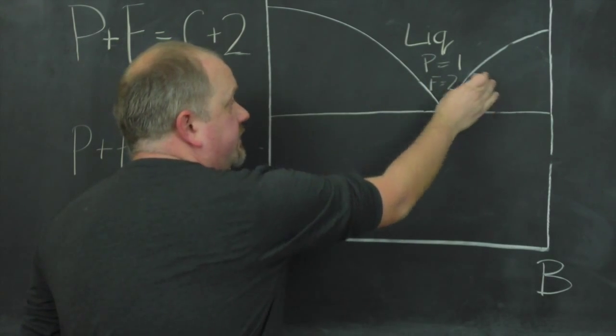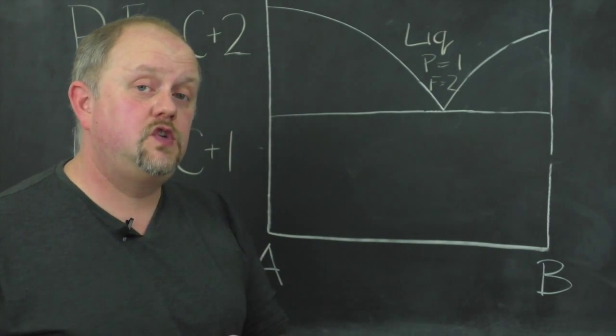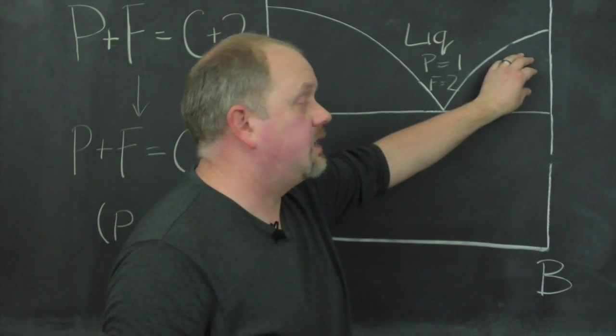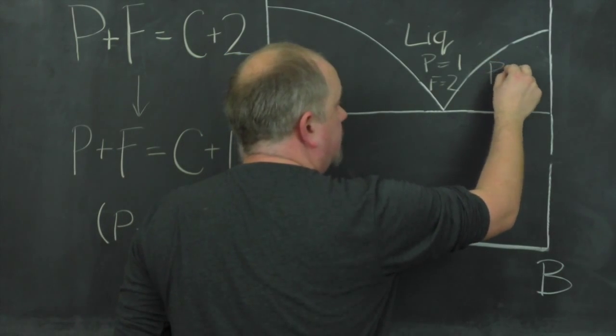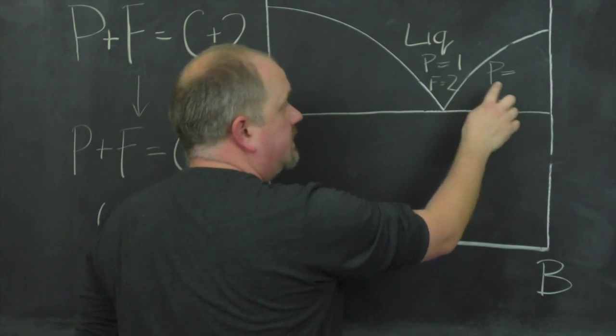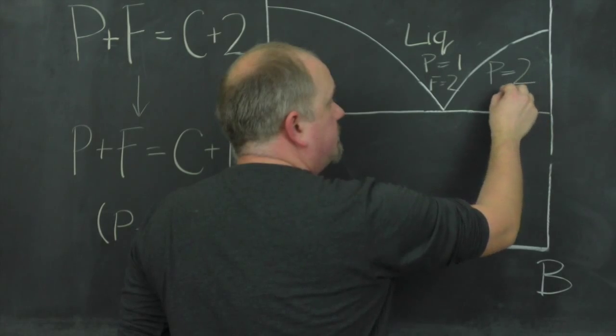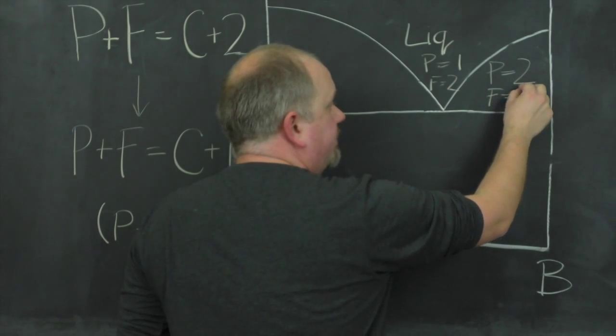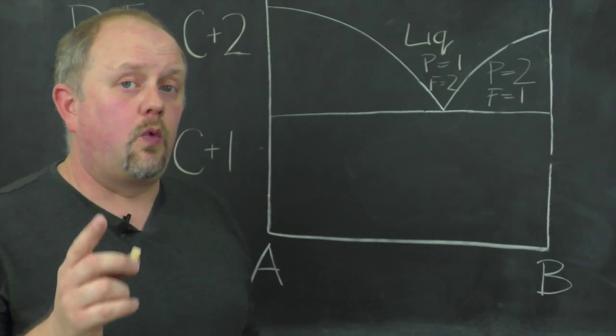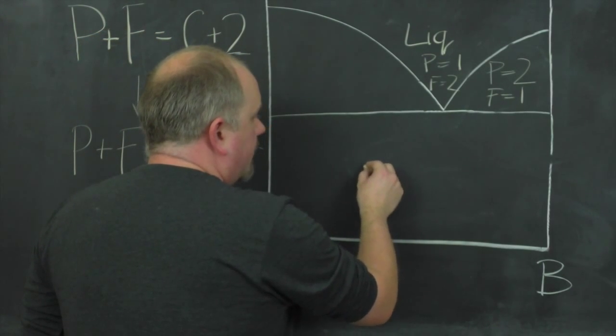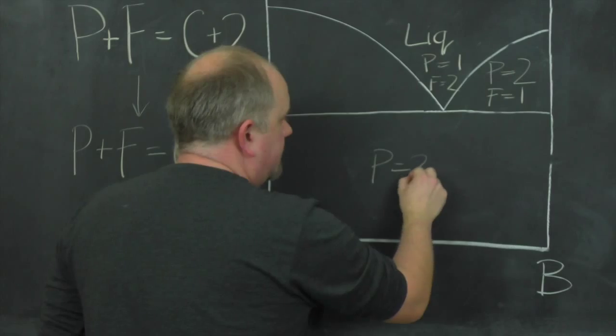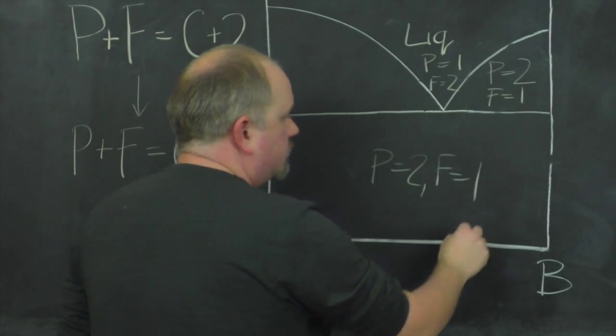Also in these two fields we know we have two phases. These are the primary phase fields of A and the primary phase field of B. So if I label this up here, we know we've got A plus liquid in here and B plus liquid in here. So P equals 2 and F equals 1. So we know one degree of freedom. Down here we have two phases again. So P equals 2, F equals 1.